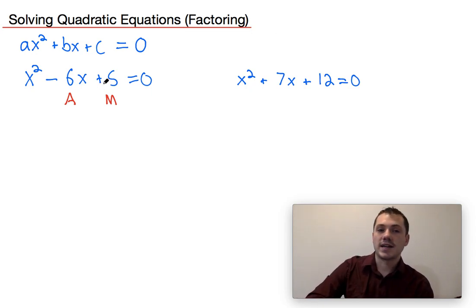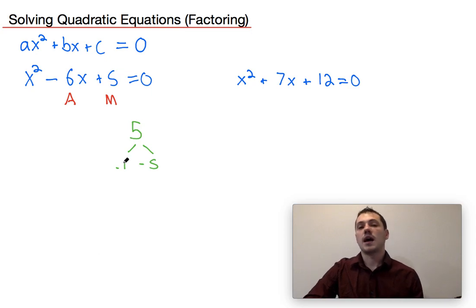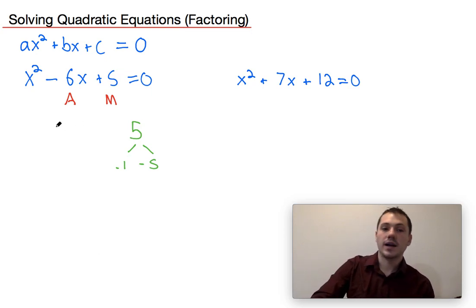So in this case, we want to find two numbers that multiply to five and add to negative six. So if I look at five, the factors of five are only one and five, or it could be negative one and negative five. Now if I take negative one and negative five and I add them together, that would in fact add to negative six.